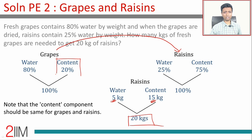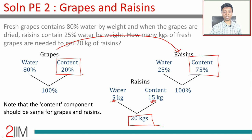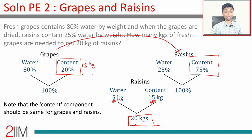Going from grapes to raisins, you reduce water — what does not change is the content. So in the grapes, we must also have had 15 kilograms of content. This 15 kilograms of content forms 20% of the grapes, so 100% is 15 multiplied by 5, which equals 75 kilograms.